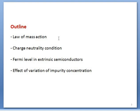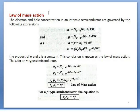The law of mass action states that the product of electrons and holes in an intrinsic or extrinsic semiconductor is always constant. In n-type, the product of majority charge carrier electrons and holes is constant. Similarly, in p-type semiconductor, we have this equation.